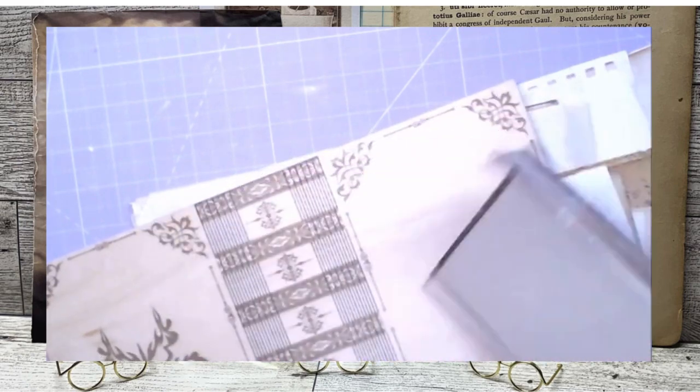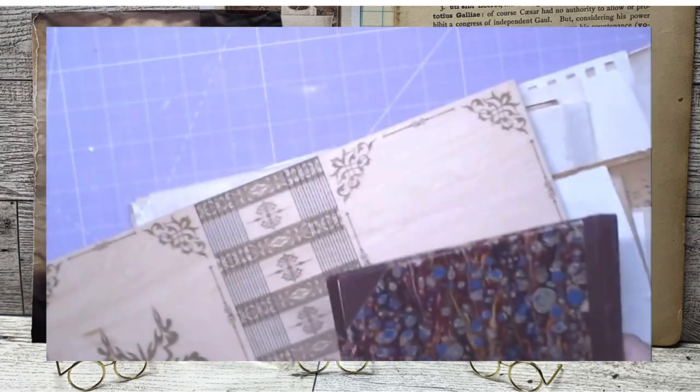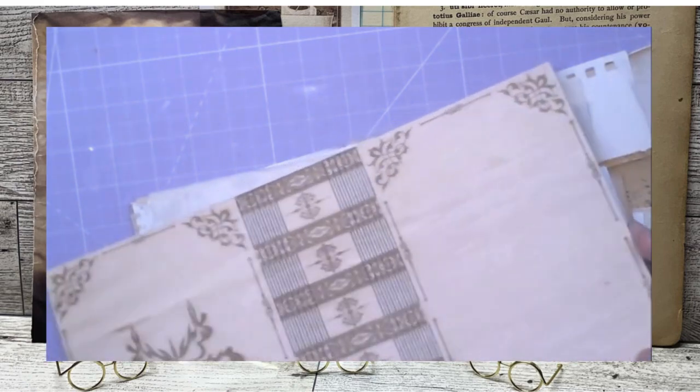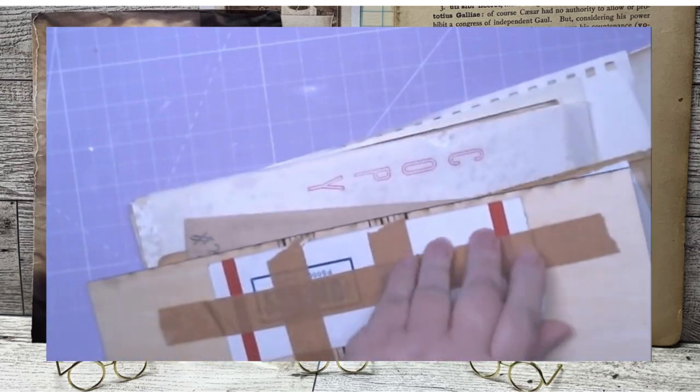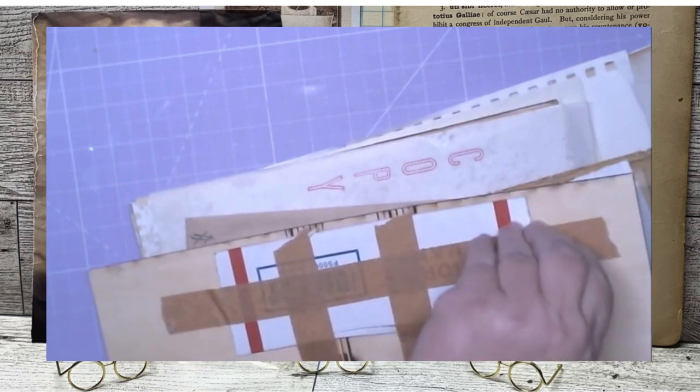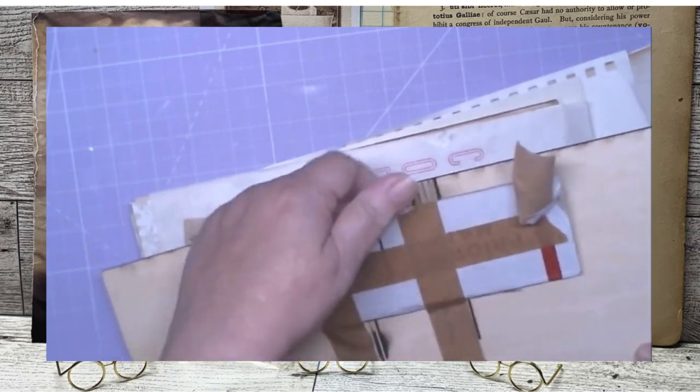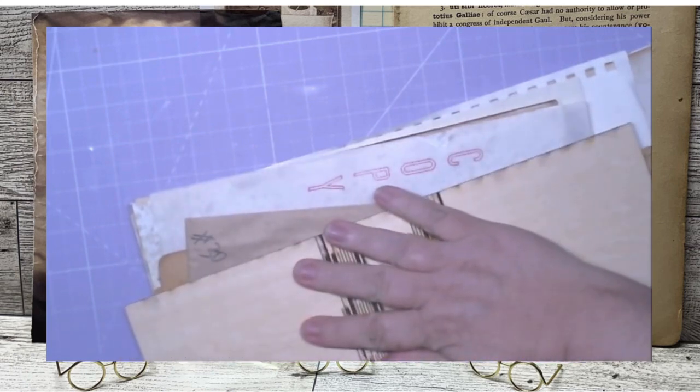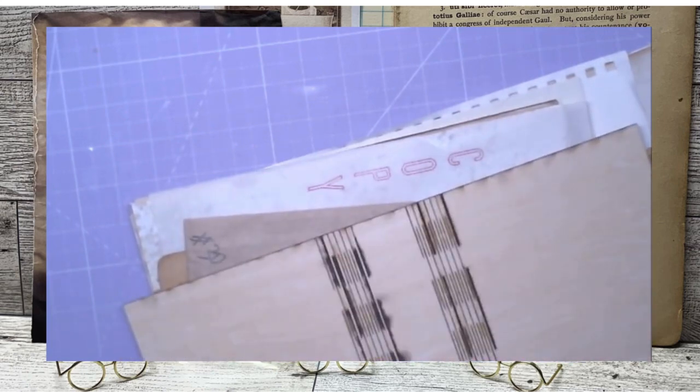We have this book cover we can make a journal with. This is made with a laser machine and Johnny makes them. If I can find the link to her shop, I will link it down below for you guys.